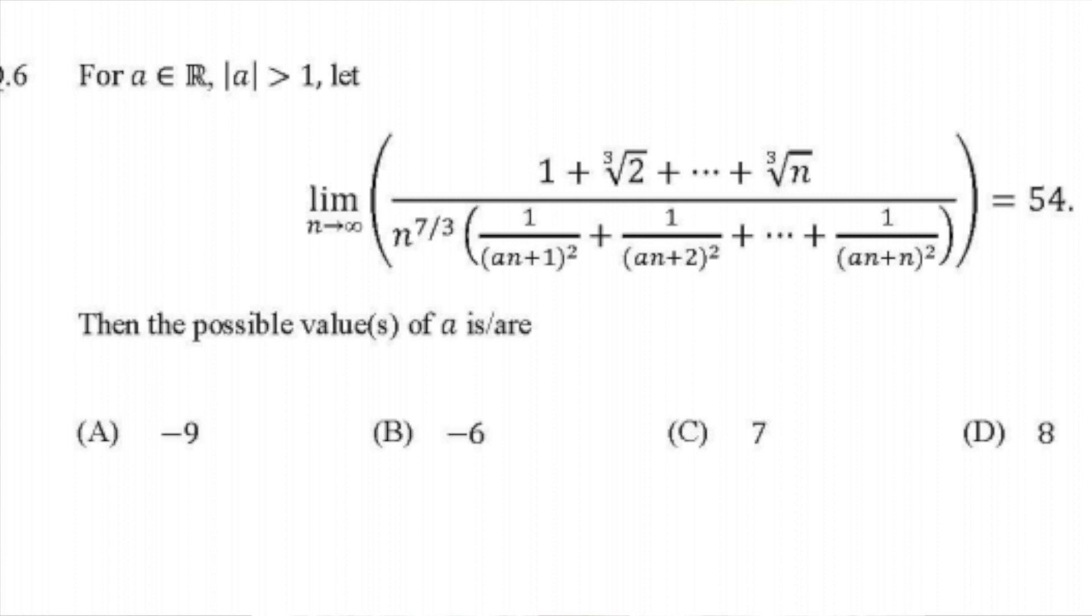Here's the question. We have a limit as n goes to infinity of a quotient. The top is a bunch of cube roots, the bottom we have n to the 7 over 3 and a bunch of 1 over something squared, equal to 54. We're asked what a makes this equation true, and we have multiple choices a, b, c, d. The thing is there can be more than one answer, so we have to pick all possible correct answers. If you find this problem interesting, pause the video here, give it a try, and think of what you would do if you were to solve this problem.